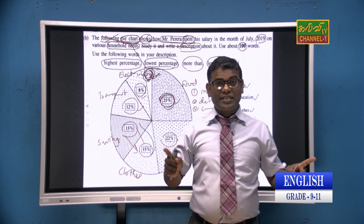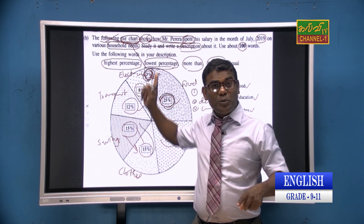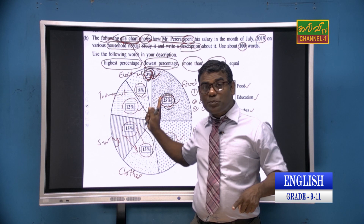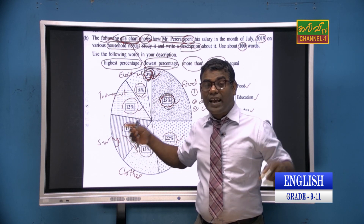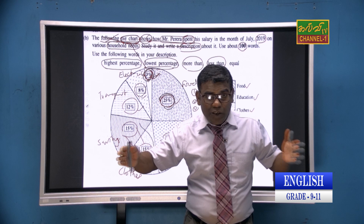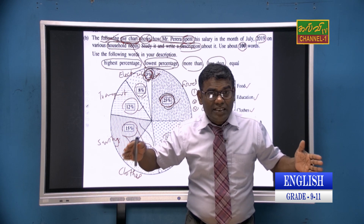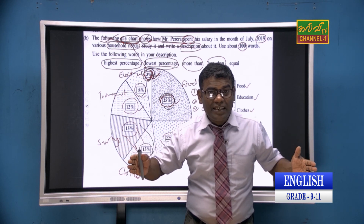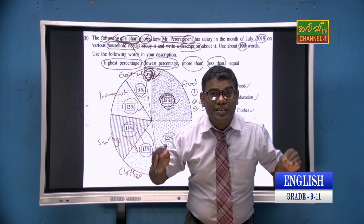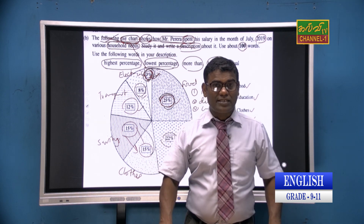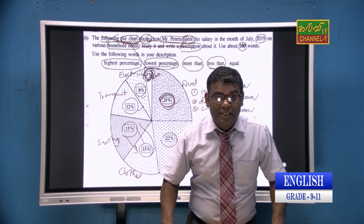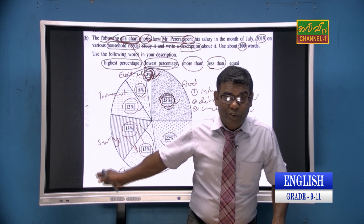You have to do a lot of practices based on this pie chart, bar chart and table chart. If you can do the activities clearly and successfully, you may get a good mark — 10 marks. It is allocated 10 marks for this question.